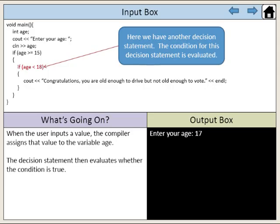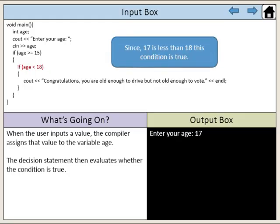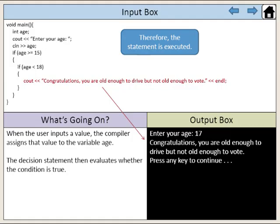Here we have another decision statement. The condition for this decision statement is evaluated. Since 17 is less than 18, this condition is true. Therefore, the statement is executed.